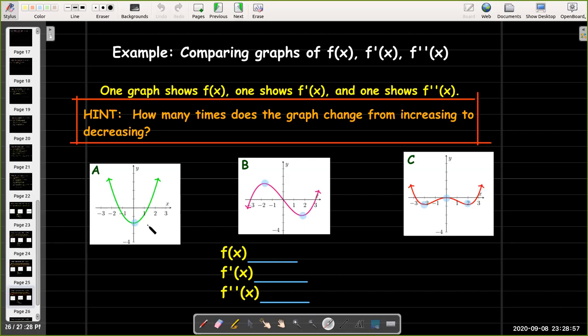So the derivative of A should have only one zero. Neither B nor C has only one zero; they have more. So neither B nor C could be the derivative of A.